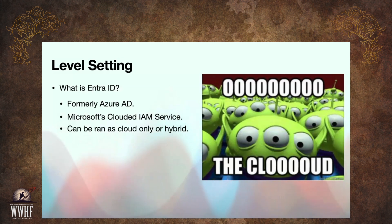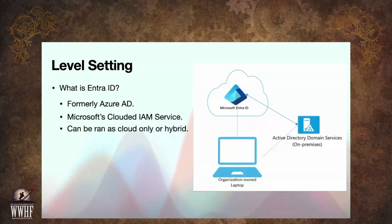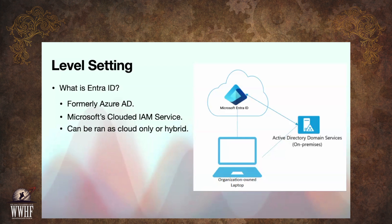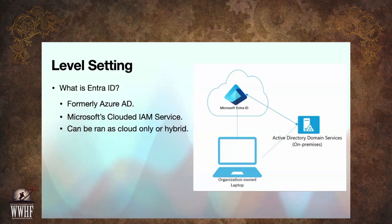It can be run as a cloud-only service, or it can be run hybrid. Hybrid means we're running Active Directory and then pushing the attributes from Active Directory to our users in Entra ID. And so we've got this Entra ID identity service that's controlling all our users.